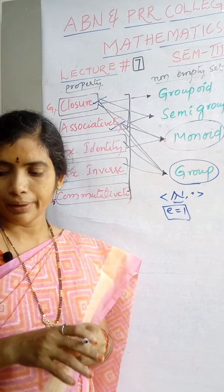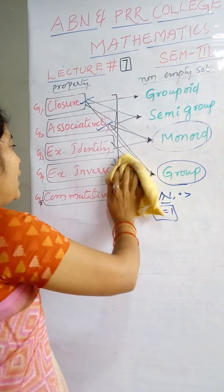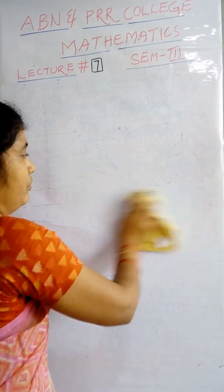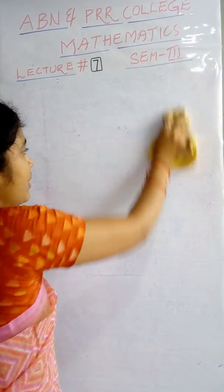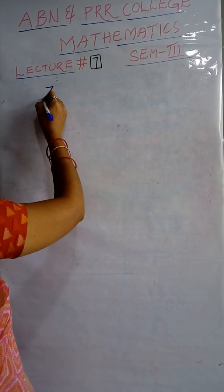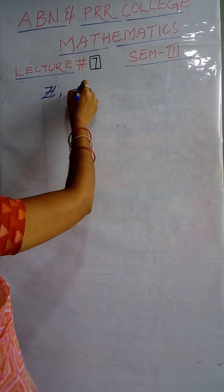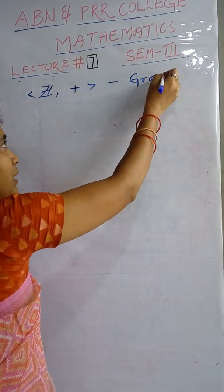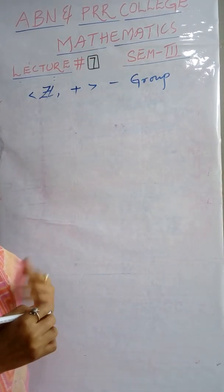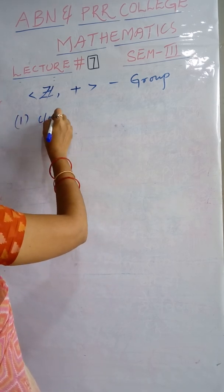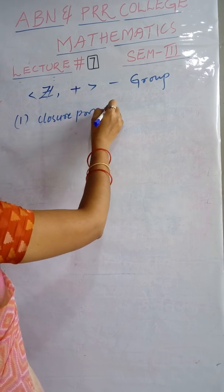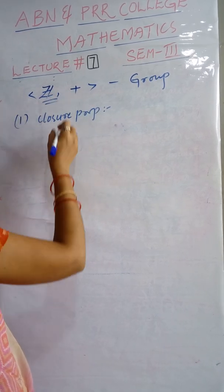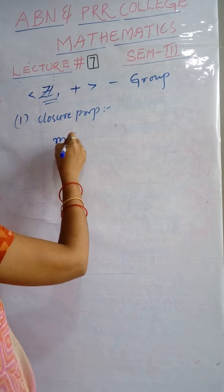Now let us discuss what is a group and then what is a commutative group. Consider the set of integers and addition. The first problem is to prove that the set of integers under addition — denoted (Z, +) — is a group. Let us take any two integers, say m and n, to discuss the closure property.